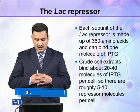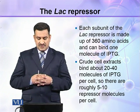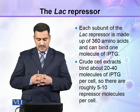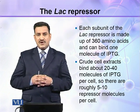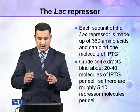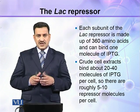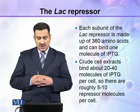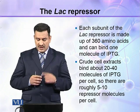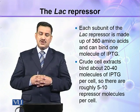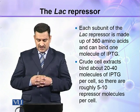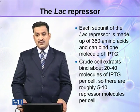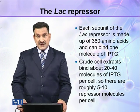Each subunit of the Lac Repressor is made up of 360 amino acids and can bind one molecule of IPTG. Crude cell extracts bind about 20 to 40 molecules of IPTG per cell.